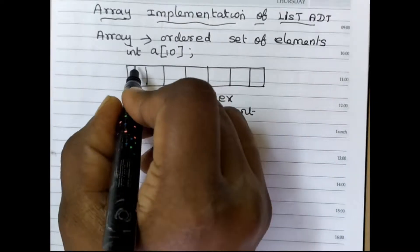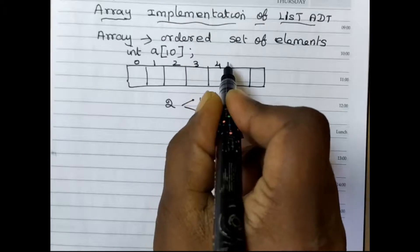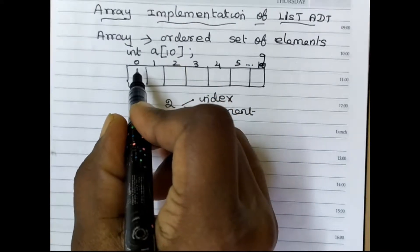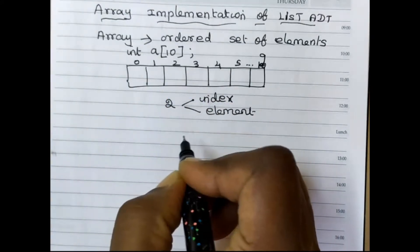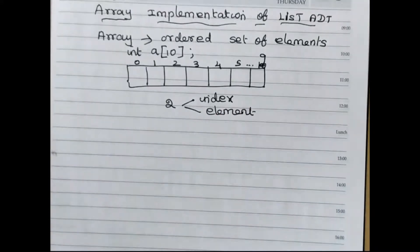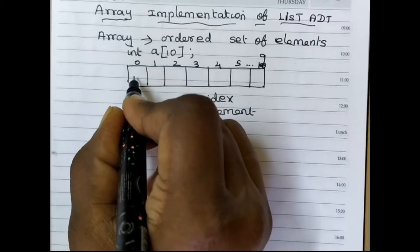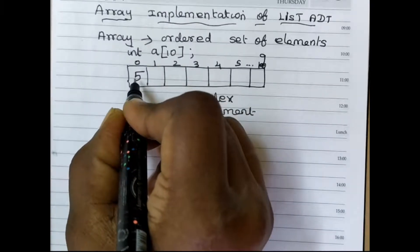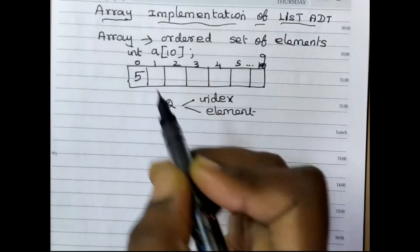The index part is going to start from 0, 1, 2, 3, 4, 5, and so on up to 9, and we are going to store elements in those positions. Using the index value, we can access the corresponding element.